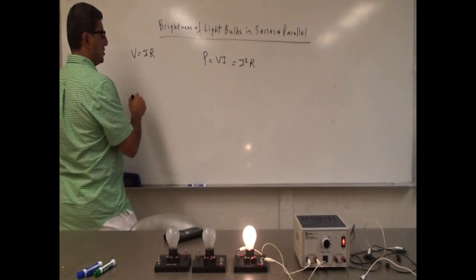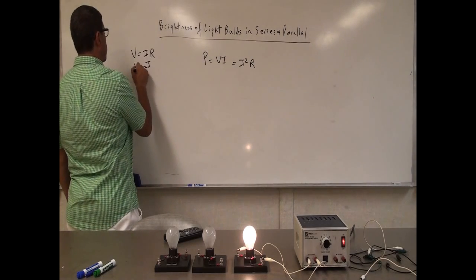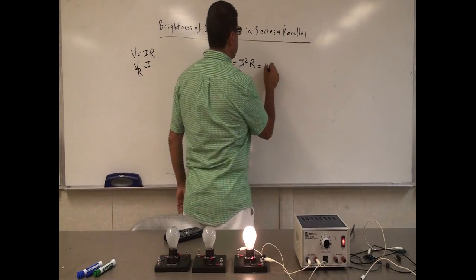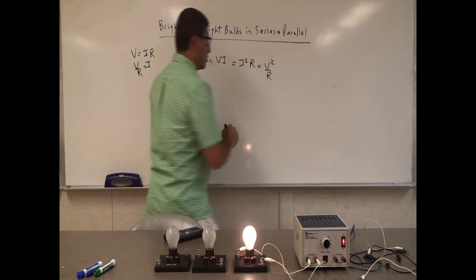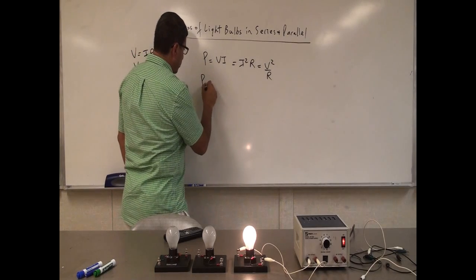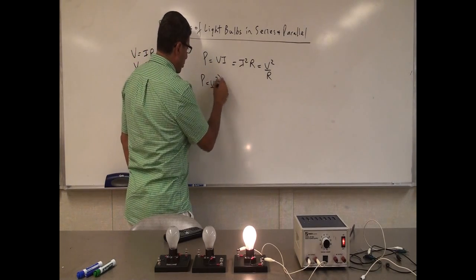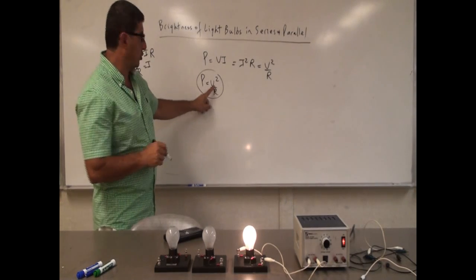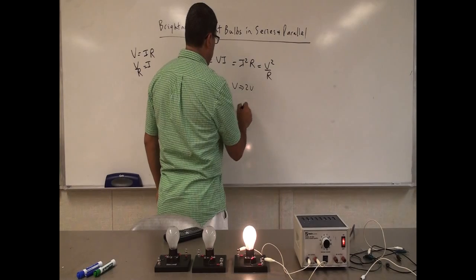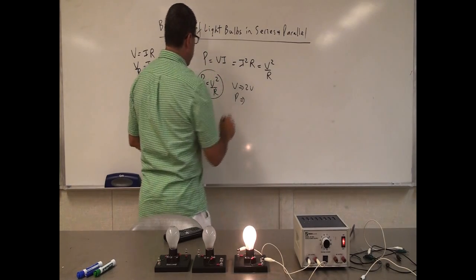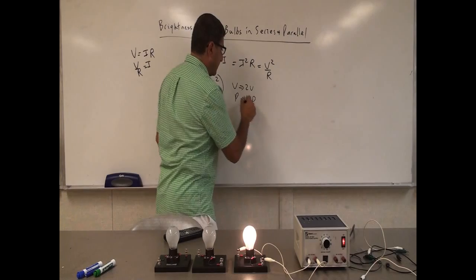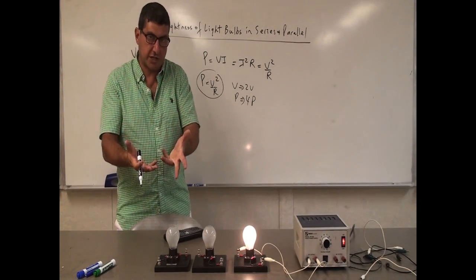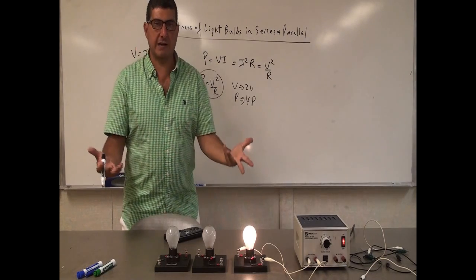Another alternate equation is to replace the current I with V over R. So if we substitute I as V over R, we get V squared over R. I'm going to be testing out P equals V squared over R. So what happens if I double the voltage across a light bulb? If V becomes 2V, the power should quadruple — four times P. So if I double the voltage across a light bulb, it should shine four times as bright.